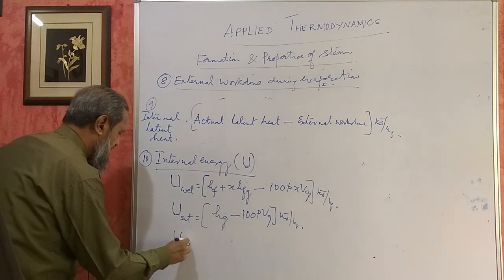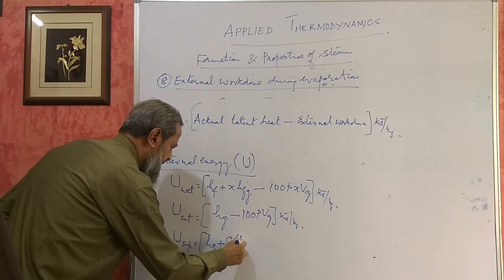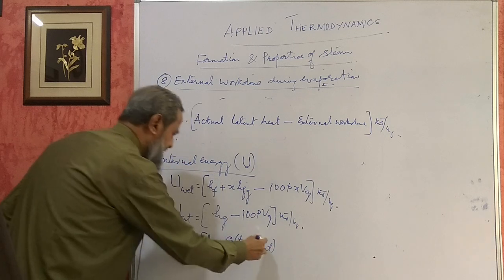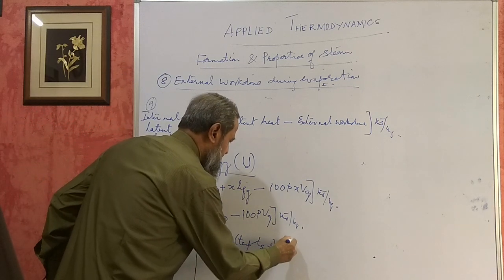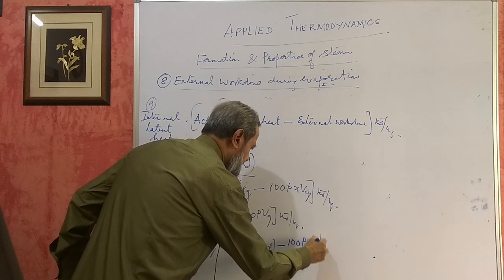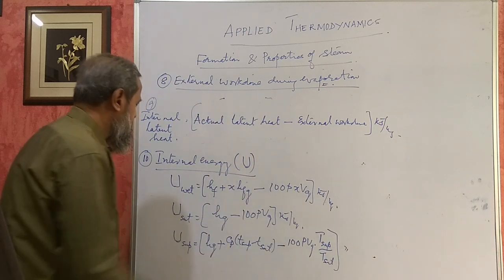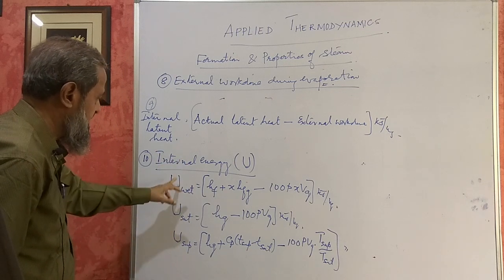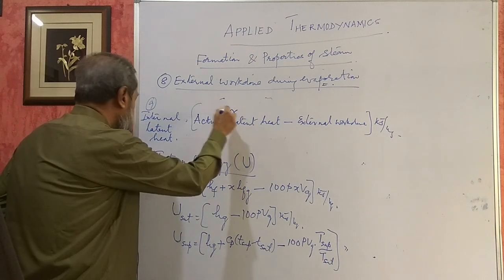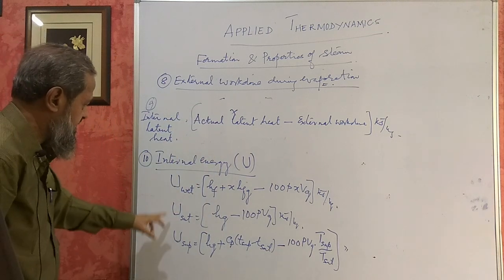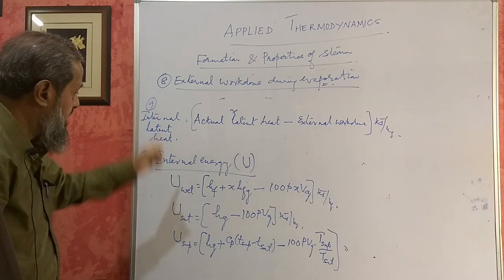For superheated steam, internal energy is HG plus CP times (t_sup minus t_sat) — here temperatures can be in degrees Celsius — minus 100 times p times vg times (T_sup divided by T_sat), where the temperatures in the last term must be in degrees Kelvin. What is most important to know is specific volume of steam, enthalpy of steam, and internal energy of steam.